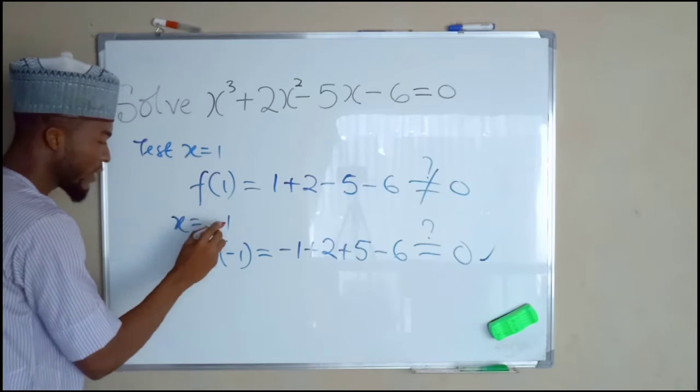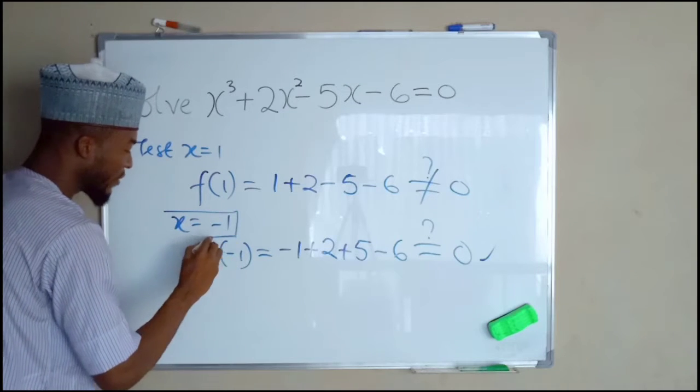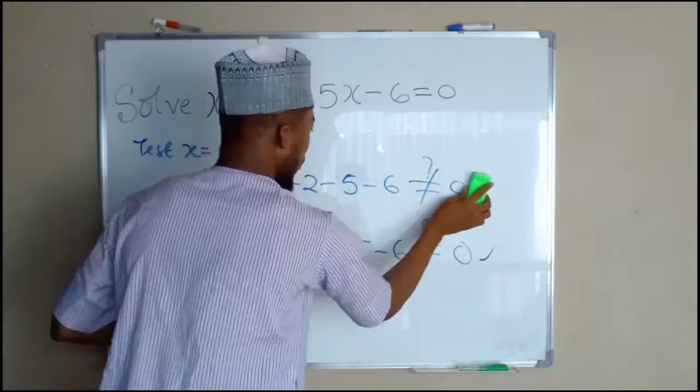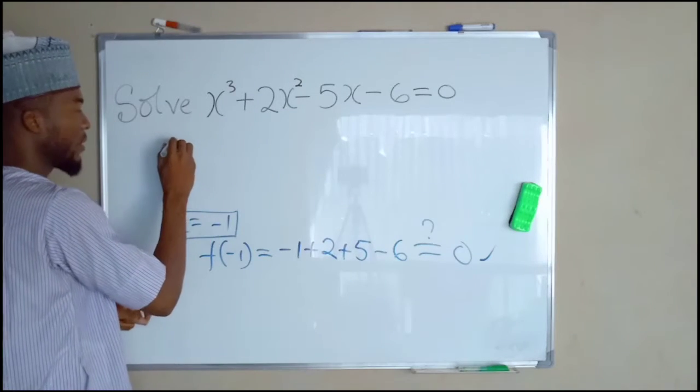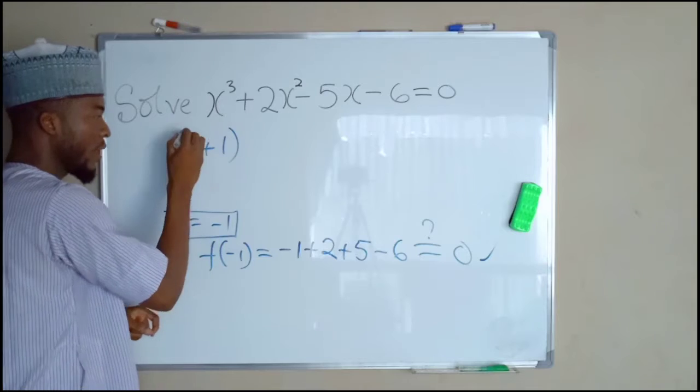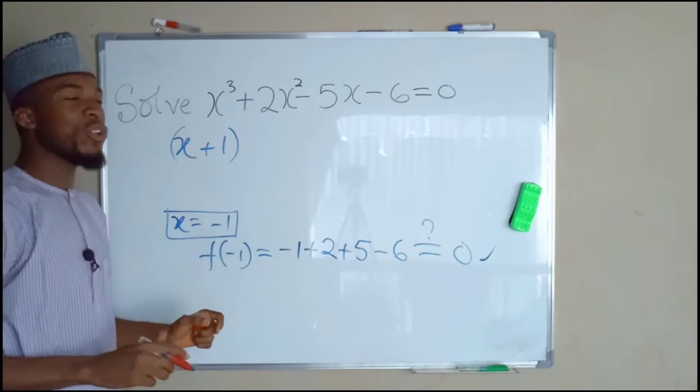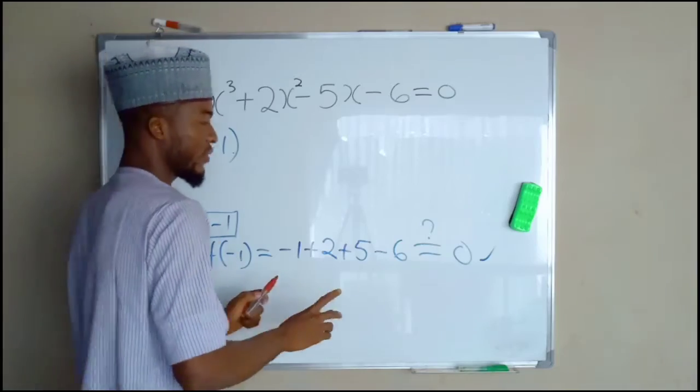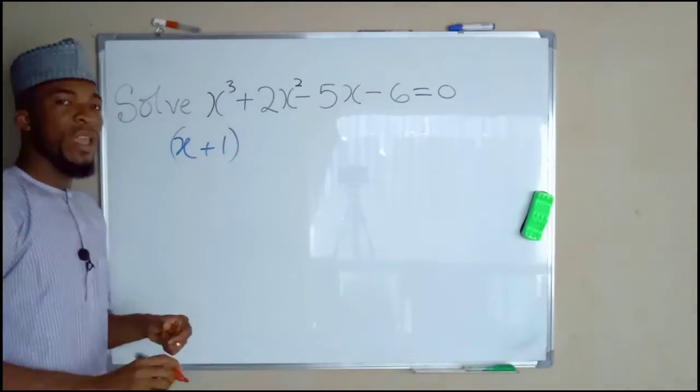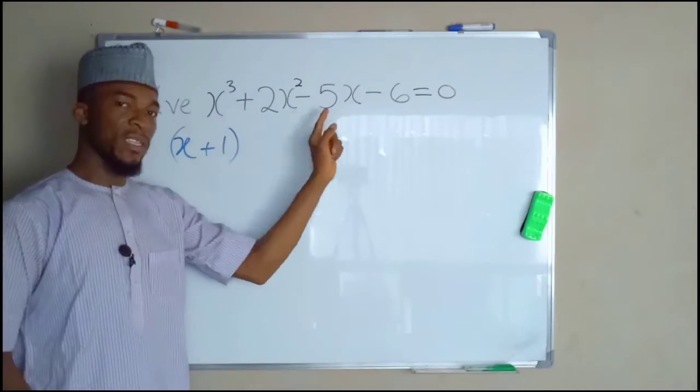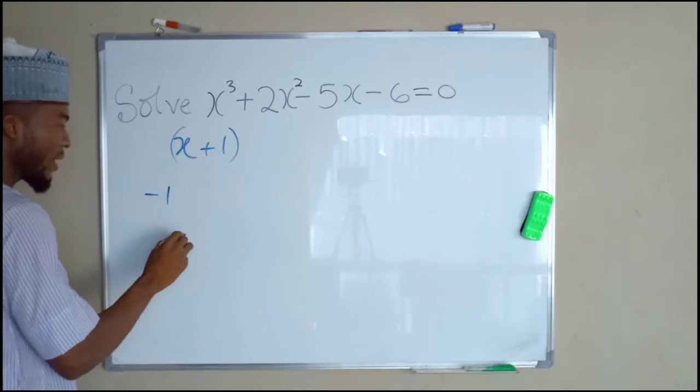Hence, we say negative 1 is one of the roots of this cubic equation. Therefore, x plus 1 is one of the factors of this cubic equation. So let me show you how we are going to find the other factors. Already, we have seen that negative 1 satisfies this equation. So we have our negative 1 here.